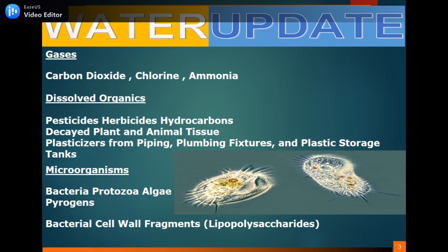Gaseous contaminants include carbon dioxide, chlorine, and ammonia. Dissolved organic contaminants include pesticides, herbicides, hydrocarbons, decayed plant and animal tissue, and plasticizers from piping, plumbing fixtures, and plastic storage tanks.